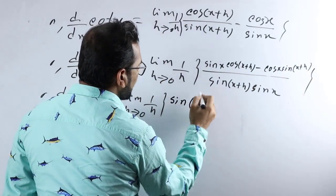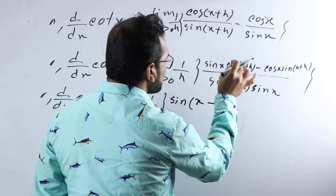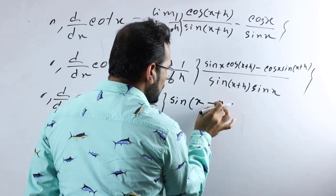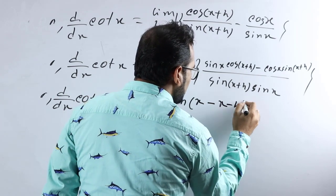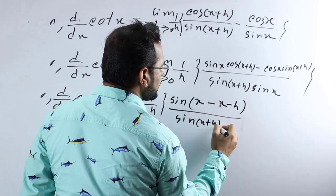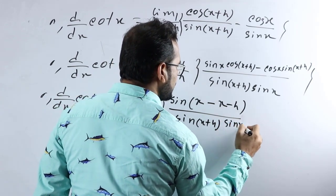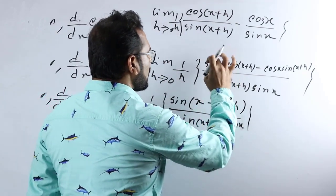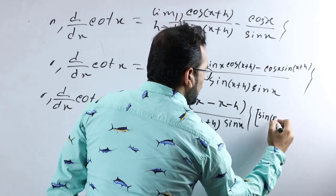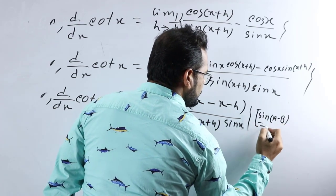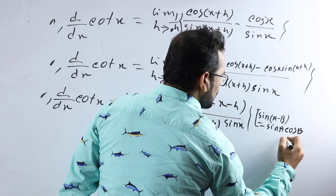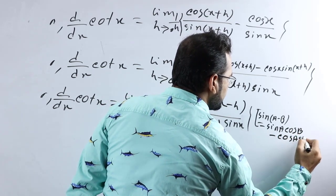For your reference, the formula is: sin(A minus B) equals sin A cos B minus cos A sin B. Here A is x and B is x+h, so sin x cos(x+h) minus cos x sin(x+h) equals sin(x minus (x+h)) equals sin(minus h).